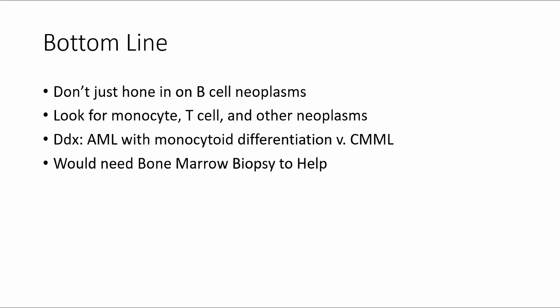So bottom line is when you look at a flow, don't just look for B cell neoplasms, you have to keep your eye open for other entities like monocytic T cell or other neoplasms. And in this case, with the aberrant expression of the monocytes, monocyte markers, I have the differential was AML with monocytoid differentiation versus chronic myelomonocytic leukemia. And what would help to cinch the diagnosis would be a bone marrow biopsy.